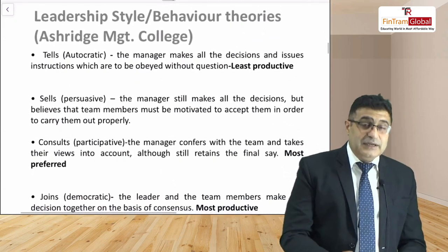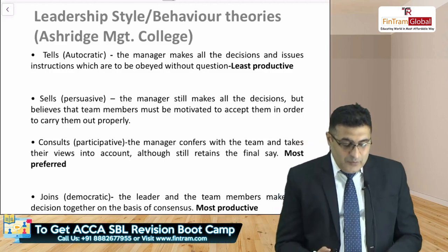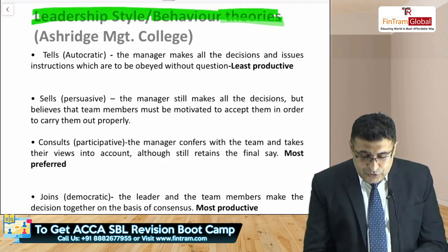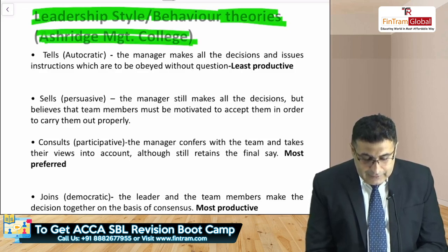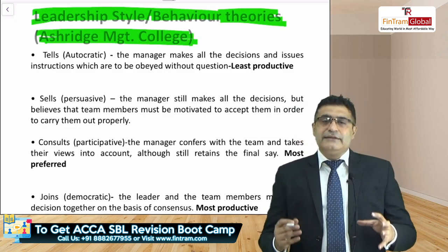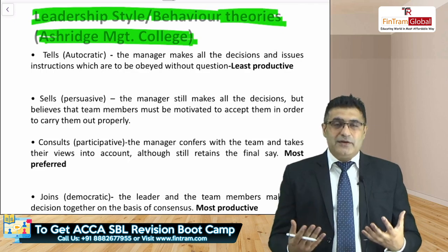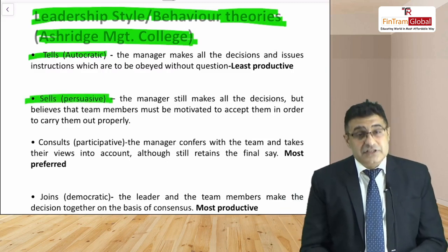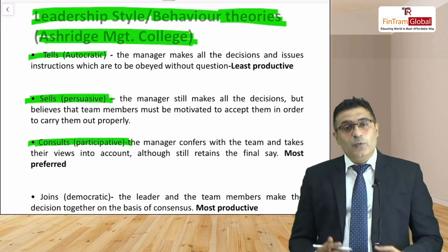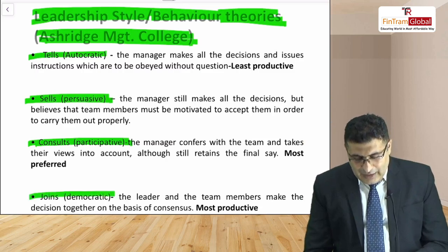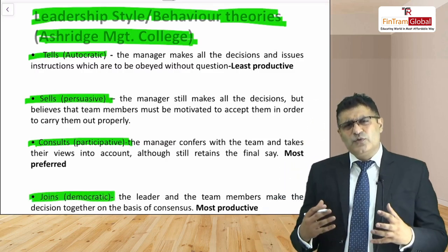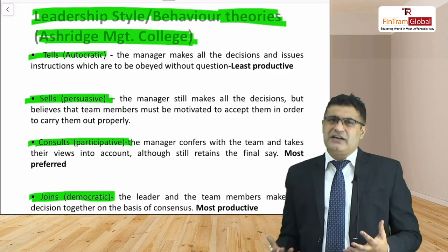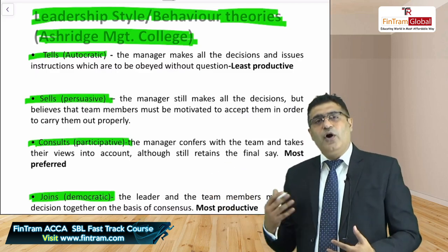Then we became more mature and the behavioral theories came in. Ashridge Management College introduced leadership styles: one can be autocratic — the one who tells; persuasive — the one who sells; participative — the one who consults; and democratic — the one who joins. We started with 'leaders are born,' then moved to different types of leaders, and we'll continue evolving.